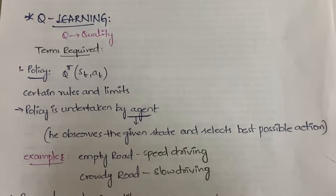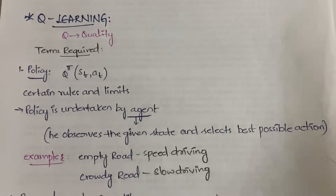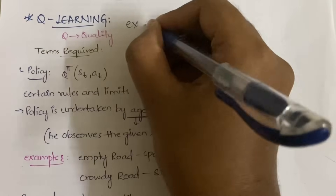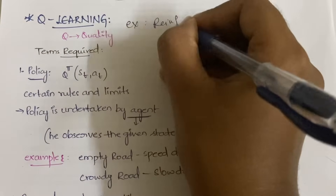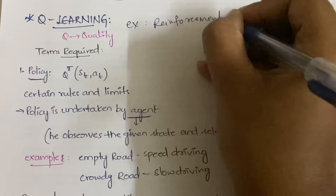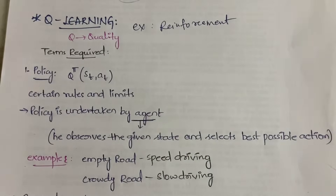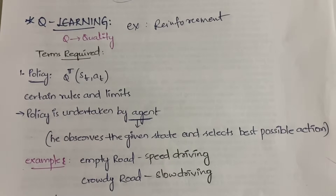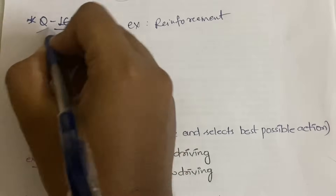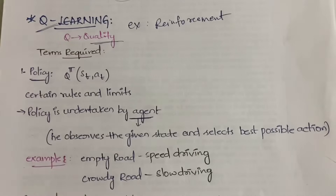Hello everyone, welcome back to my YouTube channel Trouble Frame. Today's video I'm going to explain the concept of Q-learning. Q-learning, as we already discussed in the previous video on reinforcement learning, is an example of a reinforcement learning algorithm. We have different types like supervised, unsupervised, and reinforcement algorithms in machine learning. For reinforcement algorithms we have two examples: Q-learning and temporal difference. Q here stands for quality.